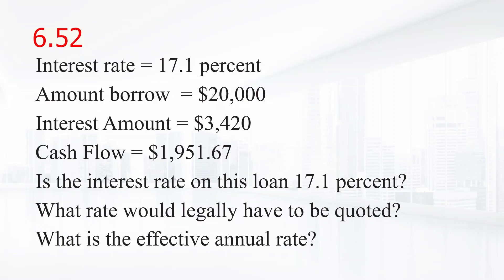A local finance company quotes an interest rate of 17.1 percent on a one-year loan. If you borrowed twenty thousand dollars, the interest for the year will be three thousand four hundred twenty dollars, because you must repay a total of twenty-three thousand four hundred twenty dollars in one year. The finance company requires you to pay twenty-three thousand four hundred twenty divided by twelve, or one thousand nine hundred fifty-one dollars and sixty-seven cents per month.